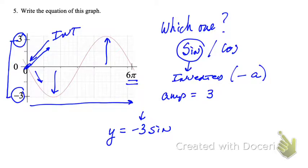Now what about the period? Well, the period is calculated—or the new period is calculated—by taking the old period divided by B. So what do we know about our new period? Well, it's 6π. What was the old period? Well, for sine and cosine, the old period is 2π, or the original period.